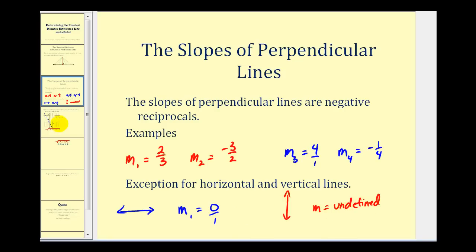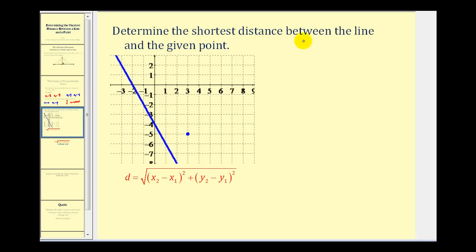Now let's look at our example. We want to determine the shortest distance between the line and the given point. The given point has coordinates three, negative five — that's going to be one endpoint of the segment. The question is: what is the other endpoint of the segment that's perpendicular to the given line? Our first step is to determine the slope of the given line, so let's pick two convenient points whose coordinates are integers.